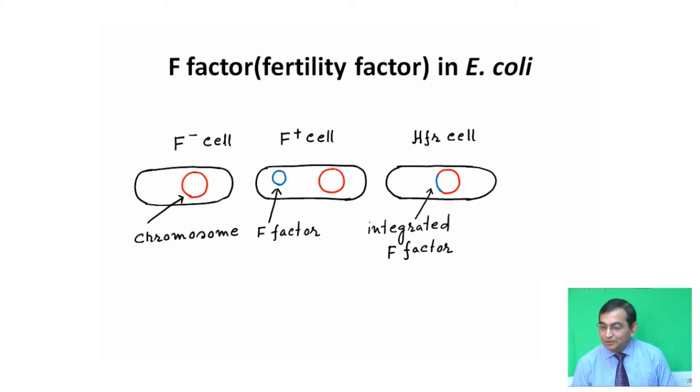Another important aspect in bacterial genetics is the F factor or fertility factor. In bacteria, F- cells are devoid of fertility factor, while F+ cells have the F factor present. HFR cells represent high frequency recombination, where the F factor is integrated with the host chromosome.